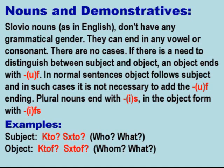Nouns and Demonstratives: Slovio nouns don't have any grammatical gender. They can end in any vowel or consonant. There are no cases. If there is a need to distinguish between subject and object, an object ends with -UF. In normal sentences, the object follows the subject, and in such cases it is not necessary to add the -F ending. Plural nouns end with -IS, and in the object form with -IFs.